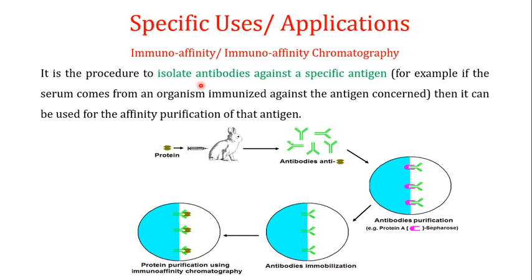Immuno-affinity chromatography is a procedure used to isolate antibodies against a specific antigen. The antibody isolated against a specific antigen can then be used as a ligand for the identification of that specific antigen from a mixture of antigens. This may have diagnostic or therapeutic applications.